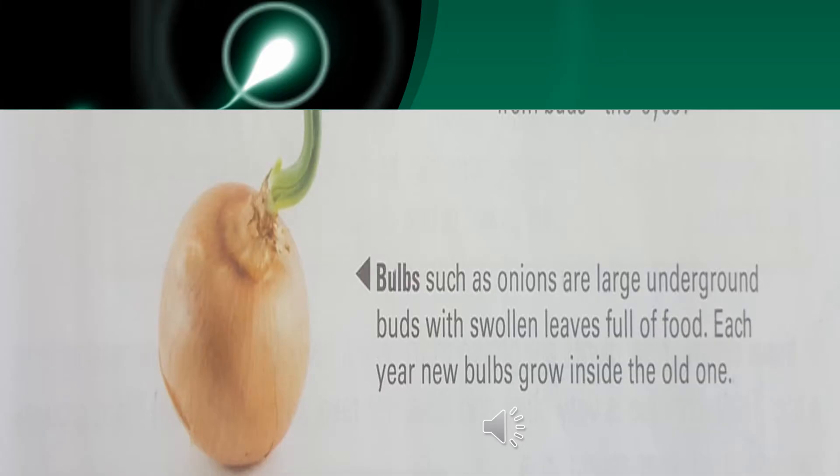Now we are discussing the example of bulbs. Bulbs, such as onions, are large underground buds with swollen leaves full of food. Each year new bulbs grow inside the old one.